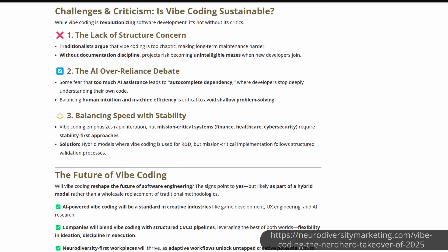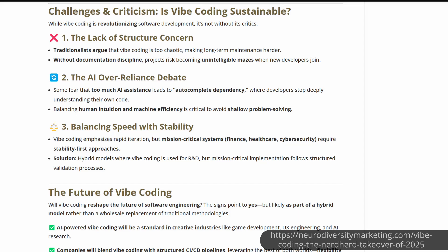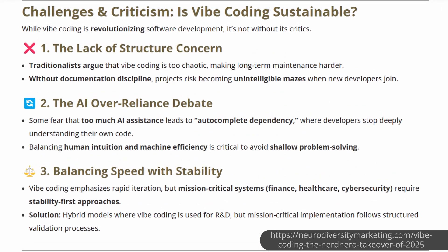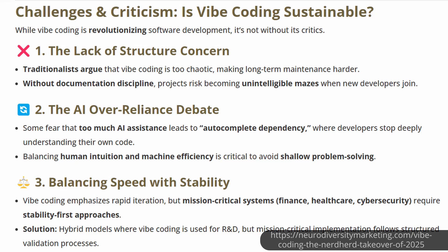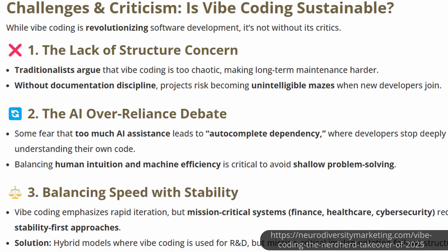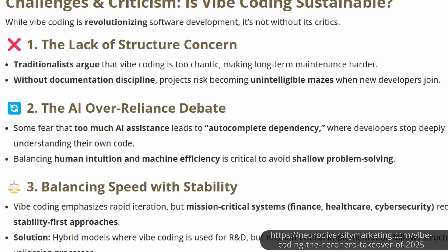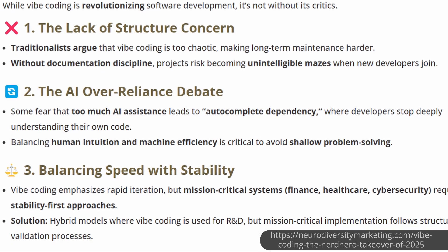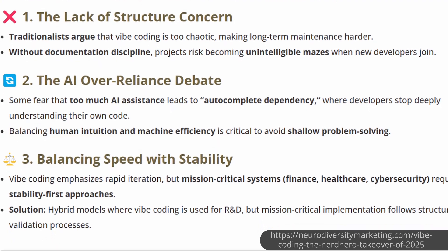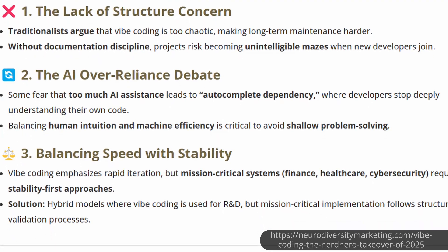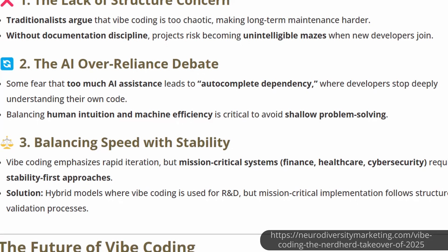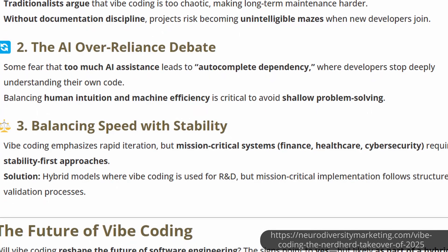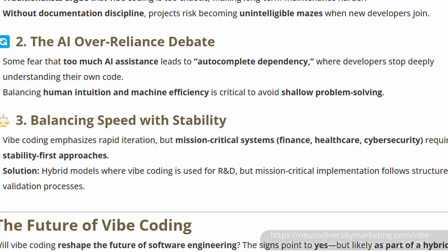What are the challenges? If we have the AI create the code, there are probably going to be issues such as lack of structure and over-reliance. I won't understand the code if I'm not actually creating it. Stability could be an issue with this type of code. And there are possible issues dealing with safety and security, and being able to properly troubleshoot to fix a problem when it occurs.